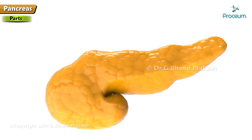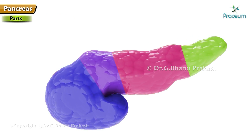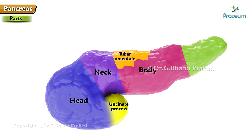Parts of the pancreas: for descriptive purposes, the pancreas is subdivided into four parts — head with the uncinate process, neck, body with tuber omentale, and tail.